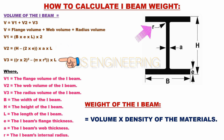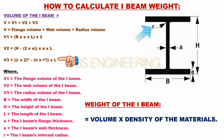V3 is the radius volume of the beam. The formula for V3 equals (R multiplied by 2) whole squared, minus pi multiplied by R squared, multiplied by L.